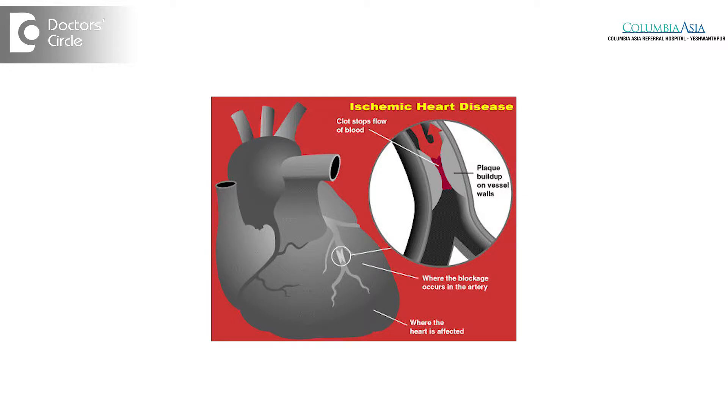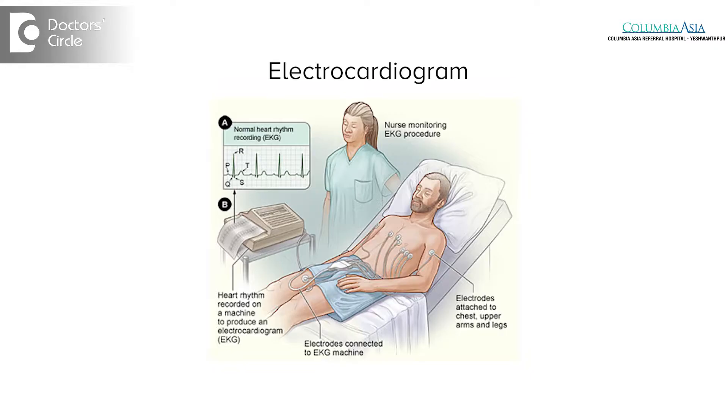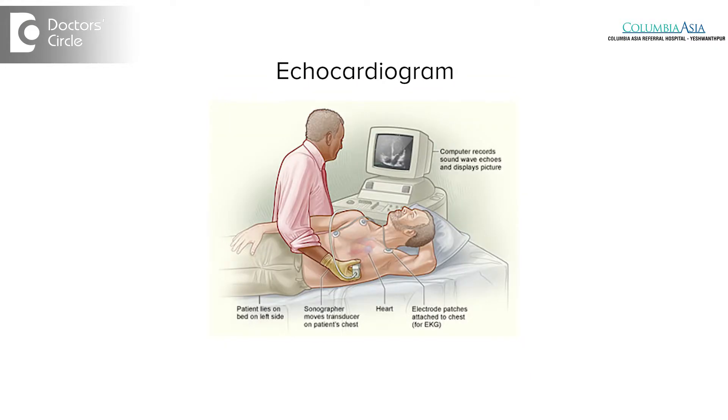Ischemic heart disease can be diagnosed in different settings, like when patients present with acute heart attack or acute onset chest pain, or when patients present with more stable chest pain on exertion or other symptoms suggestive of myocardial ischemia. The tests which are necessary in the acute setting are usually an electrocardiogram, an echocardiogram, and injury markers like troponin I.